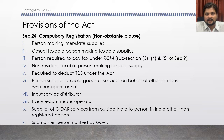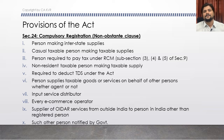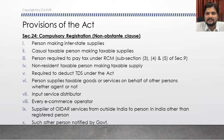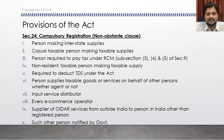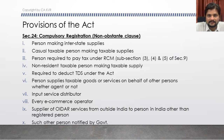These categories of persons have to mandatorily get registered under the Act even if their turnover is within the threshold limit - that is what Section 24 provides. It is very important to note that Section 24 starts with 'notwithstanding anything contained' - that is a non-obstante clause. This means this section will override any other contradicting section. If any contrary provisions are available in any other section, that section should be ignored for these categories of persons.